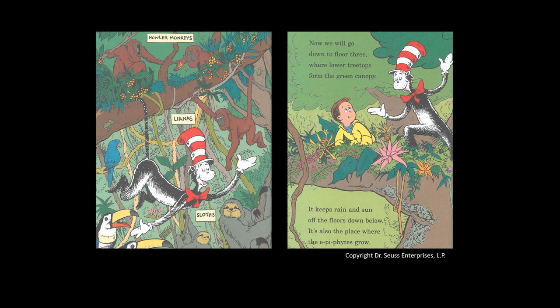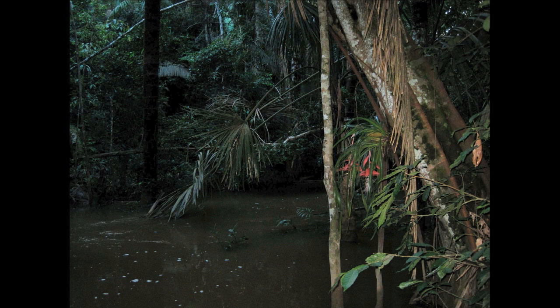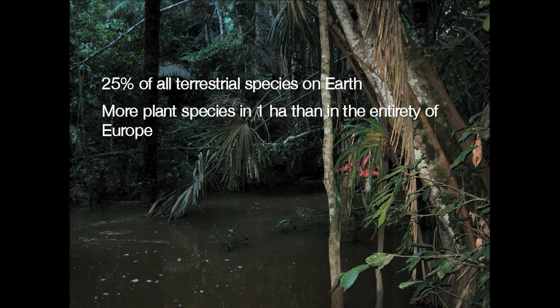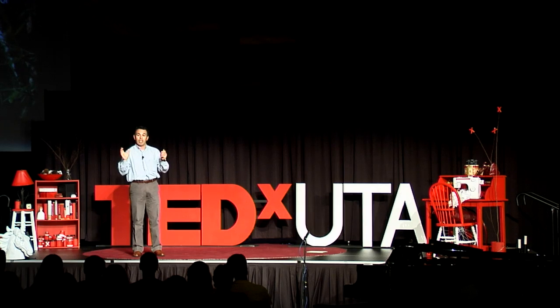The next topic was biodiversity — plants and animals. I said, I'm going to get to the Amazon and it's going to be like a zoo. I'll see all kinds of animals, all kinds of plants. But when I got there, it was a pretty dark place — and this was the middle of the day. All those books had promised me I would see something else. In fact, the books told me 25% of all terrestrial species are present in the Amazon.